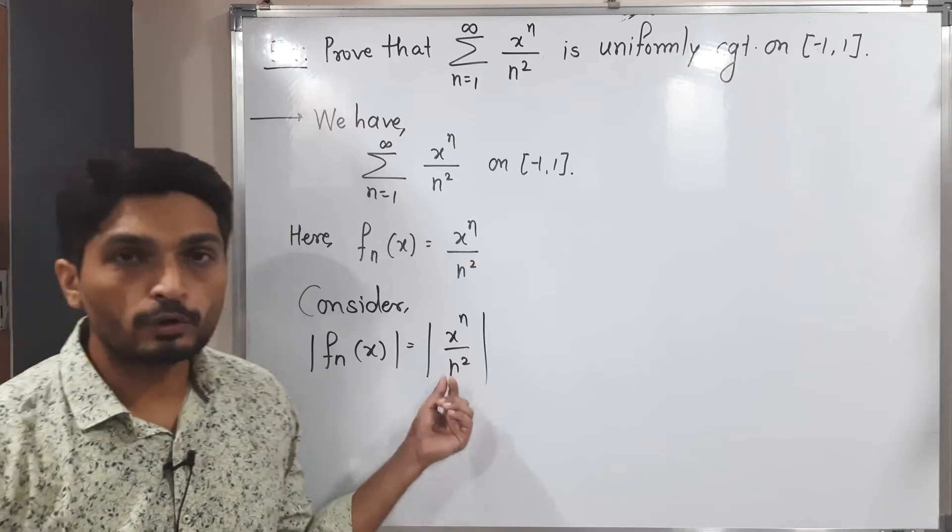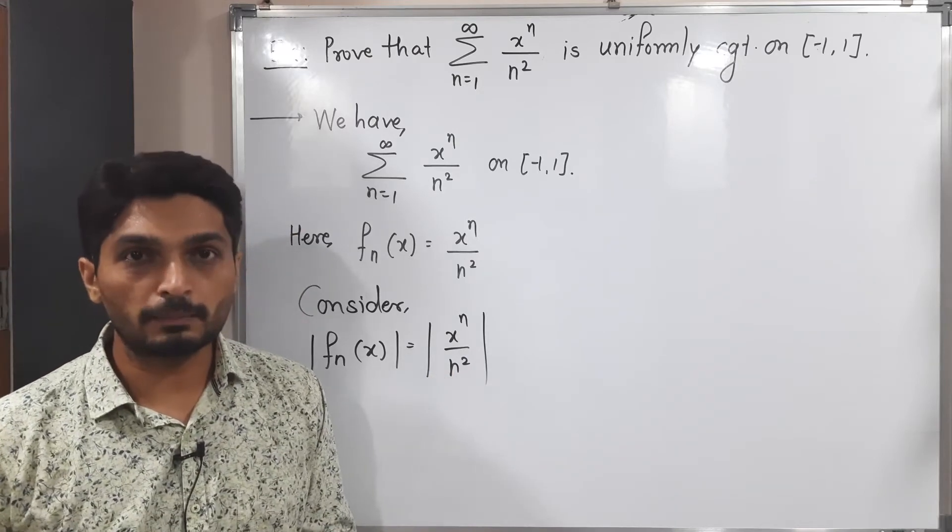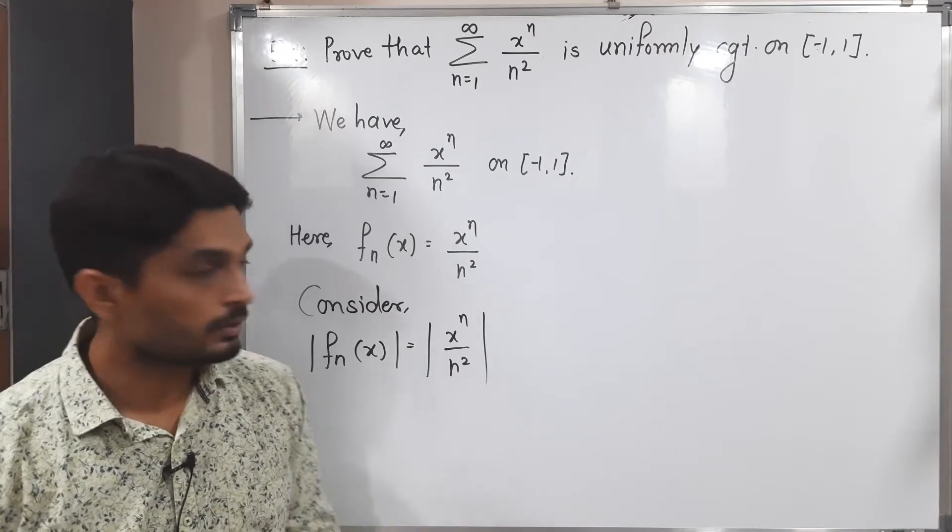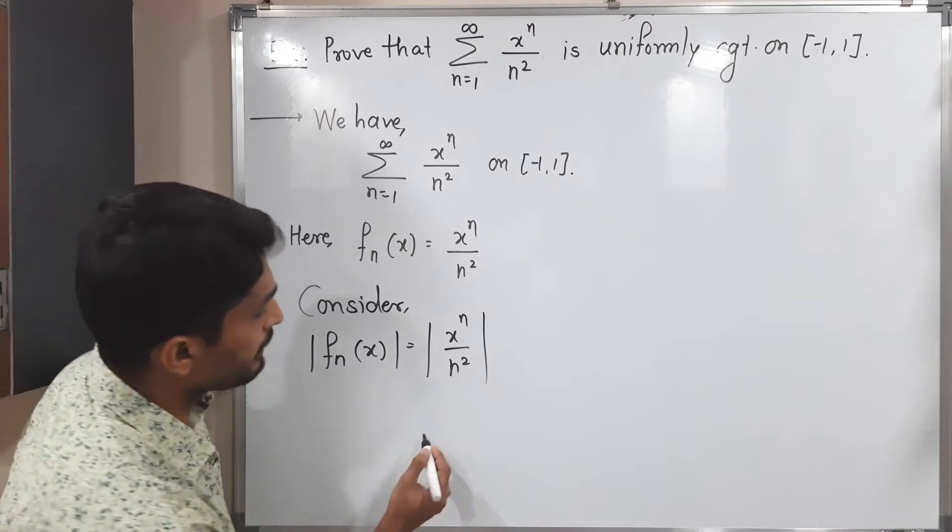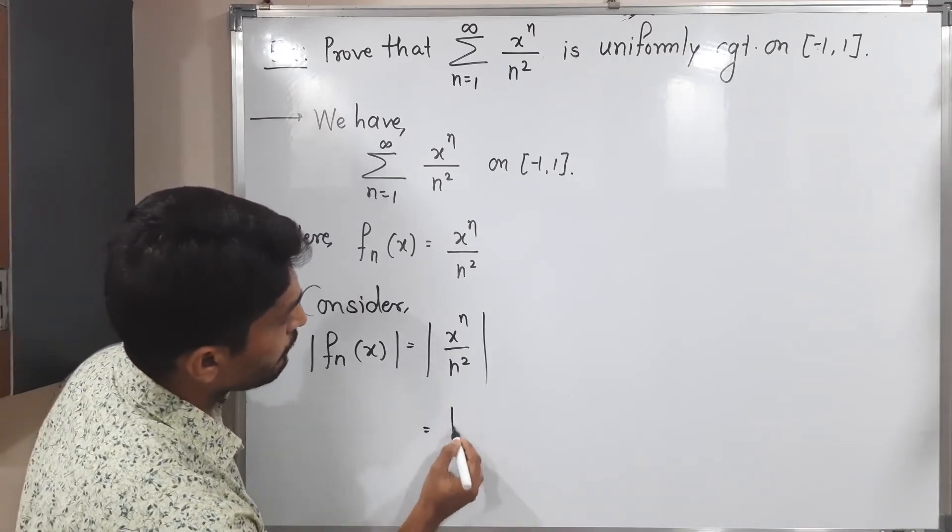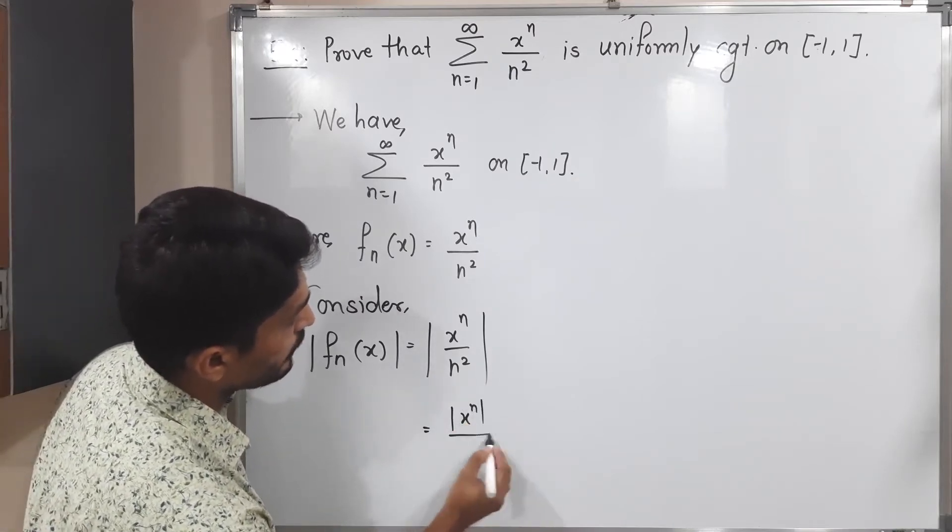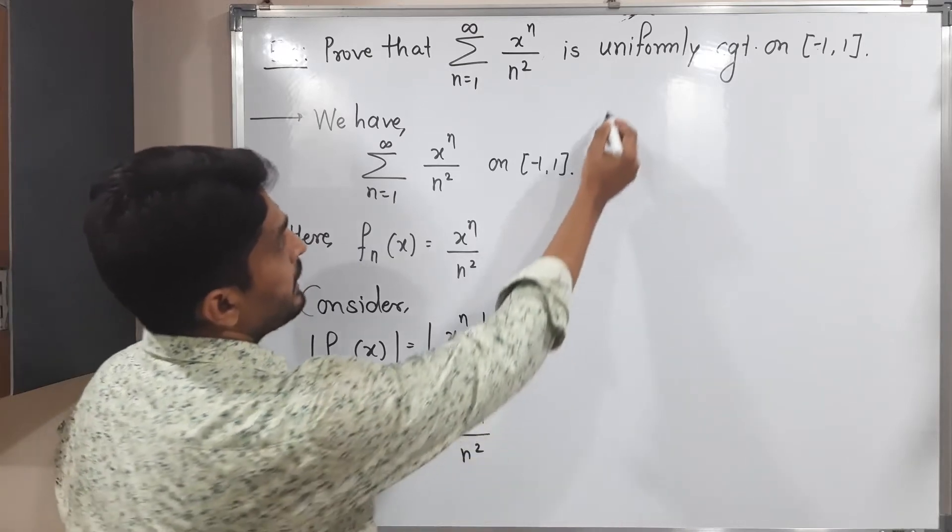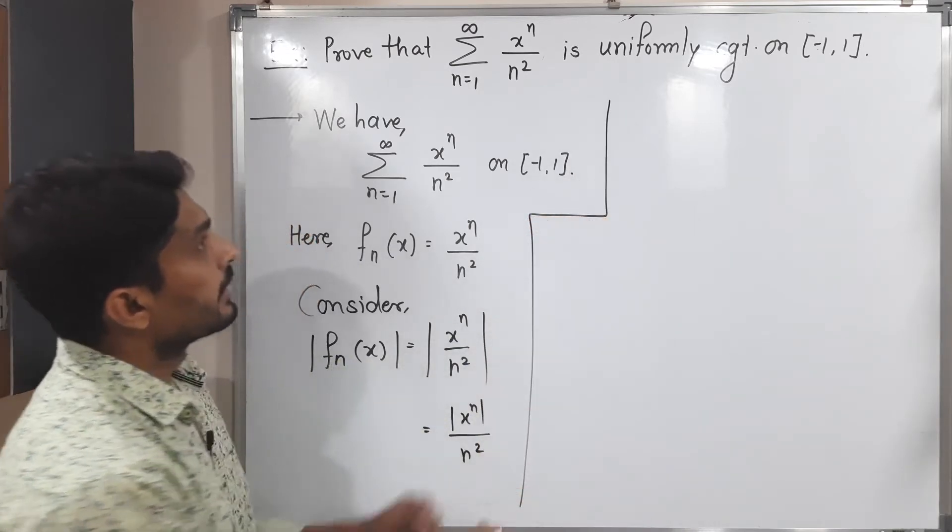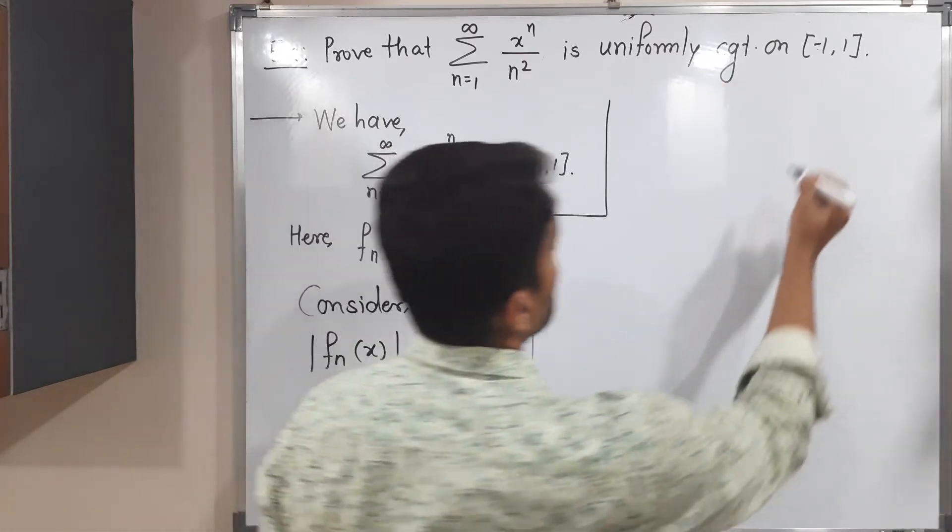There is no need to take mod to this n square. n is a natural number and its square cannot be negative, so the denominator will be positive. I'm taking mod for the numerator only upon n square. The interesting fact is x lies in that interval.